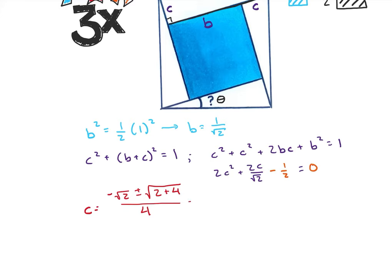This whole thing when I work it out is then going to give me negative square root of two plus or minus the square root of six divided by four. I know that the side length has to be positive. So that's going to tell us that I'm going to have to use the plus here. So C is going to be square root of six minus square root of two divided by four.